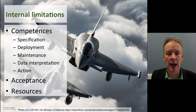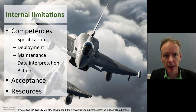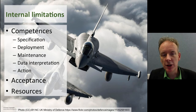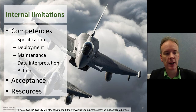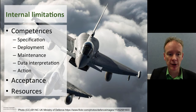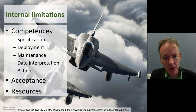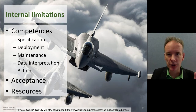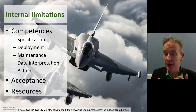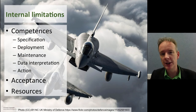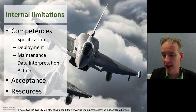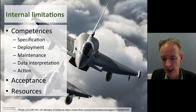Having thought about stakeholders, let's think about internal limitations. To make this work, you're going to need a whole range of competencies: people who can specify what needs to happen, people who can deploy it, people who can maintain it, people who can interpret the data and make sense of what's there, and people who can do something about it. It needs to be accepted by all internal stakeholders, and you need the resources to make it happen. I can't stress too much how much you need to think about a social system as well as a technical system. This emerging skill of interpreting data and making good action on that data is hard to build — you'll almost certainly want a multi-skilled team.